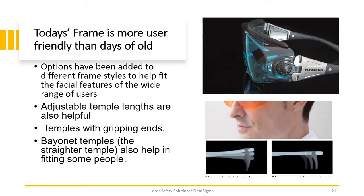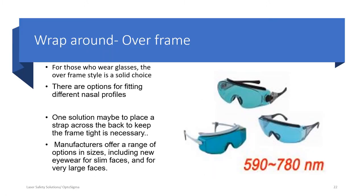For example, one pair has ratcheting temples that adjust up and down; another has clips that hold on to the back of your ear; there are bayonet side temples and straps. There is a lot out there, so you should be able to find a pair that stays comfortable on your face. Wrap-around frames can be worn by anyone but are favored by people who wear glasses, as they fit over existing frames. If a pair keeps slipping, using a strap to hold it to the back of your head is a good suggestion.